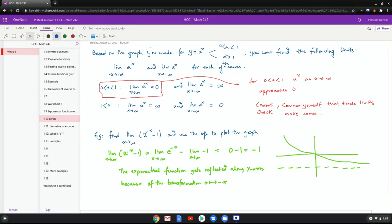Now, concept check is to convince yourself that these limits make sense. Which of them are zero, which of them are infinity. Here's an example. Find limit x goes to infinity of two to the negative x minus one, and use the info to plot the graph. Now remember, these kind of things you did when you were plotting graphs, and they were called finding endpoint behavior.